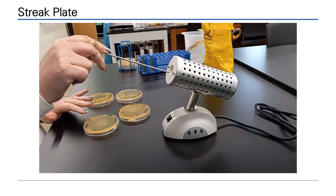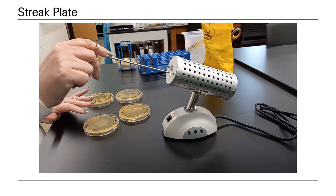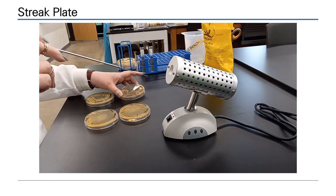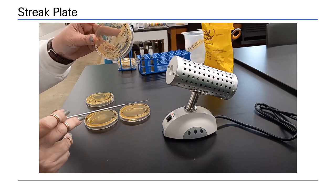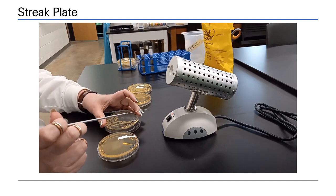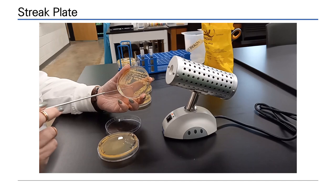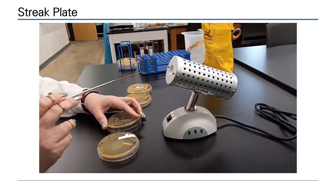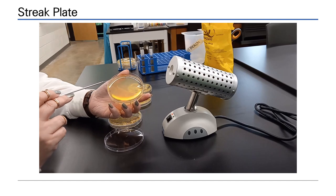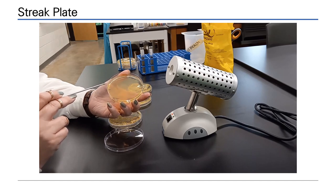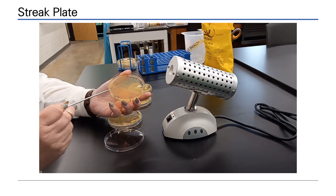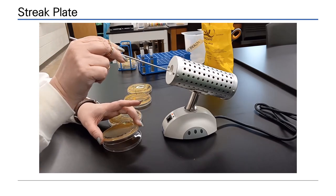Begin by sterilizing the inoculating loop. Using E. coli first, on an organized workbench, we will aseptically remove a small amount of growth. In the first quadrant of the sterile agar plate, we will inoculate E. coli in a dime-sized area. Now the streak begins. Four streak lines are usually enough for a quadrant.